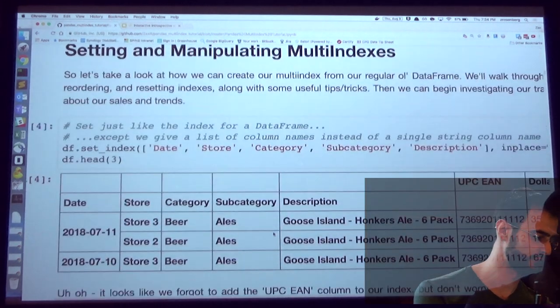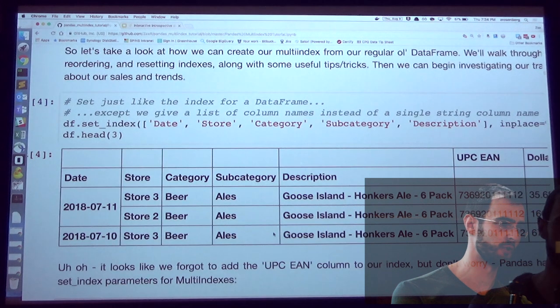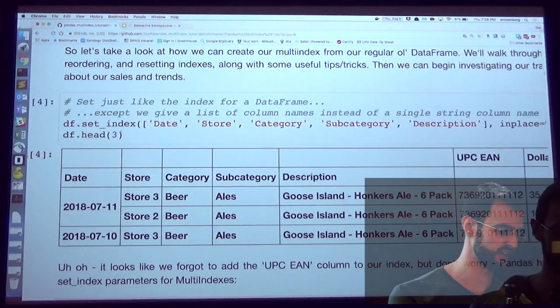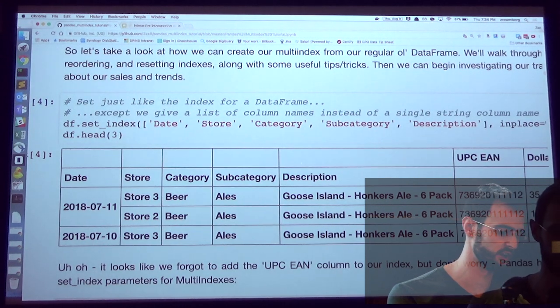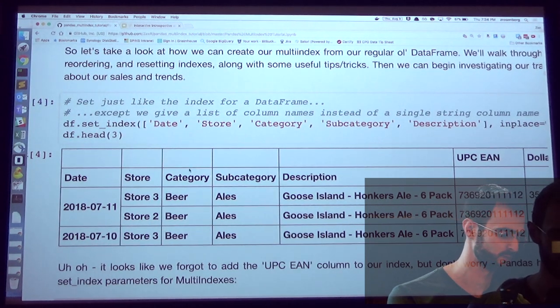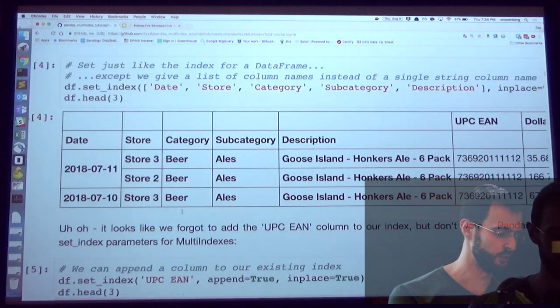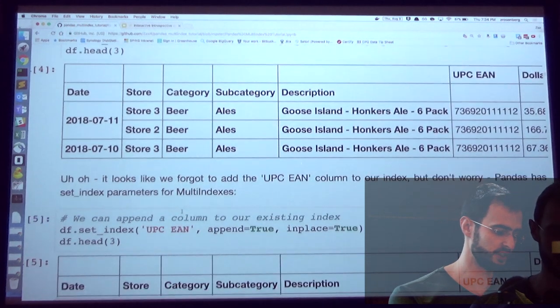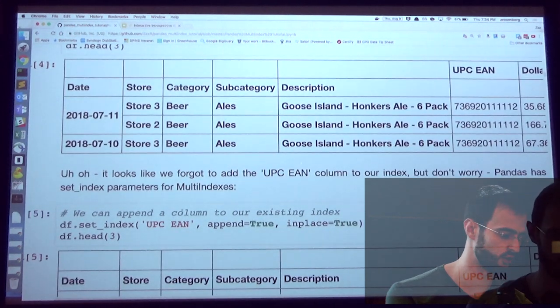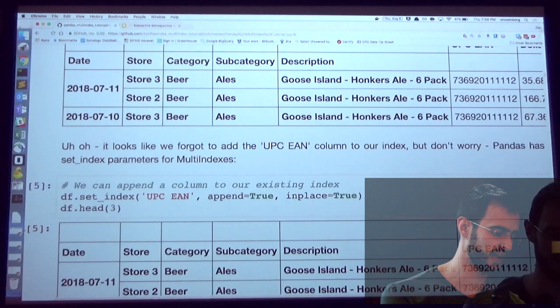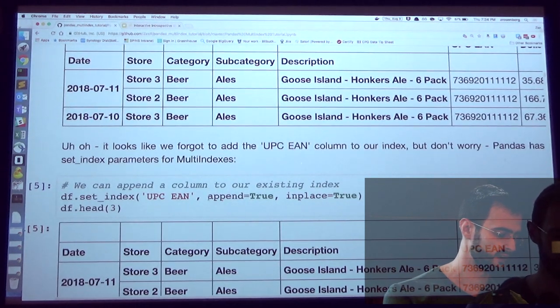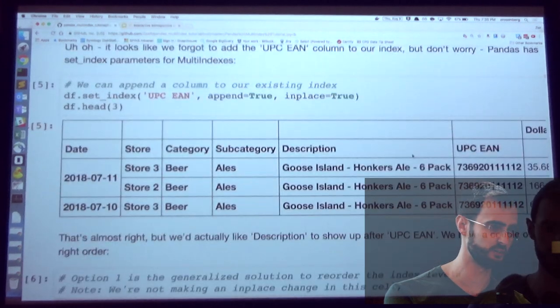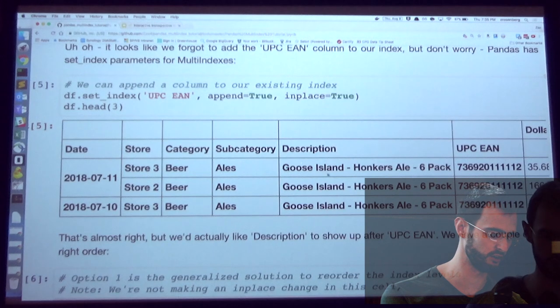So first thing we need, now that we have a regular old data frame, is we need to actually create that multi-index. Luckily, this works exactly the same way as with regular pandas. We're going to use our set_index method. Except instead of giving it a single column, we're going to give it a list of all the columns that we want there. I forgot UPC. I said it needed UPC to be unique. Luckily, there's an easy way to add a single column to your index by using the append attribute here instead of having to recreate that entire thing.